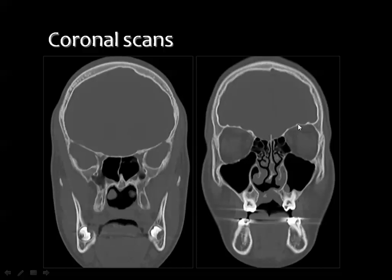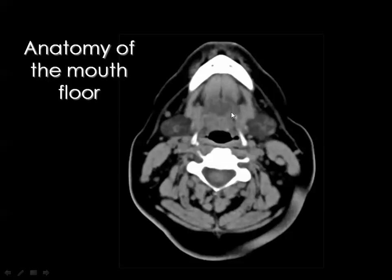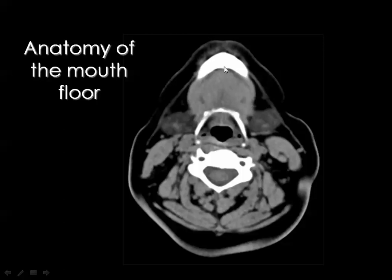Regarding the floor of the mouth: the very important midline muscle is the genioglossus (GG), and there are two muscles lateral to it which are the hyoglossus and the styloglossus. You can see the submandibular salivary gland on both sides and the sternocleidomastoid muscle. Going further down, you see the genioglossus muscle, the submandibular salivary gland, and the sternocleidomastoid muscle. Lower down, you see the muscle attached between the mandible and the hyoid bone — the hyoglossus muscle, the submandibular salivary gland, and the sternocleidomastoid muscle.